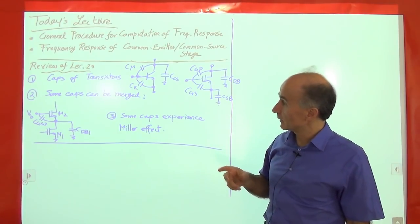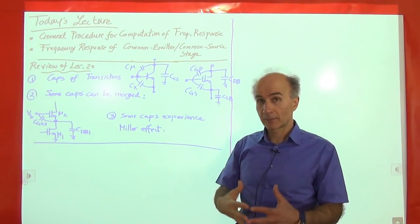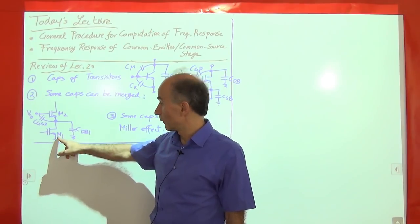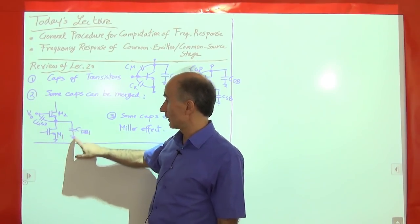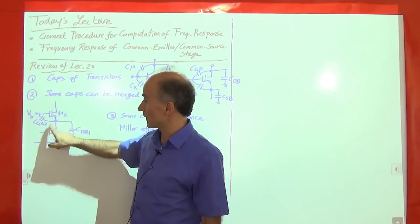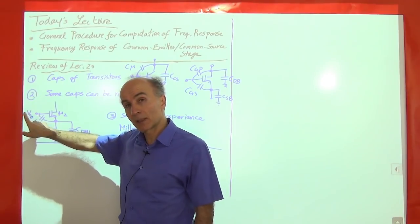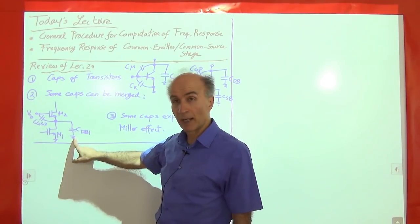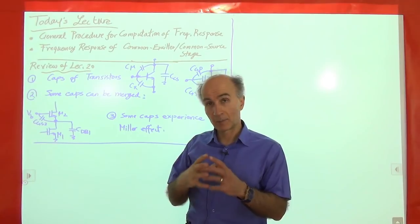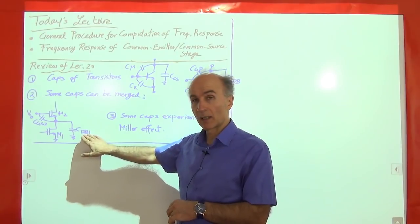We also observed that after we drop in these capacitors, sometimes they can be merged so that the circuit can be simplified. For example, in a cascode structure, M1 has a capacitance from its drain to ground, C_DB1, and M2 has a capacitance between the gate and the source, C_GS2. Since both terminals are AC grounded and share the same node, these two caps are exactly in parallel and can be replaced by one capacitor equal to C_DB1 plus C_GS2.